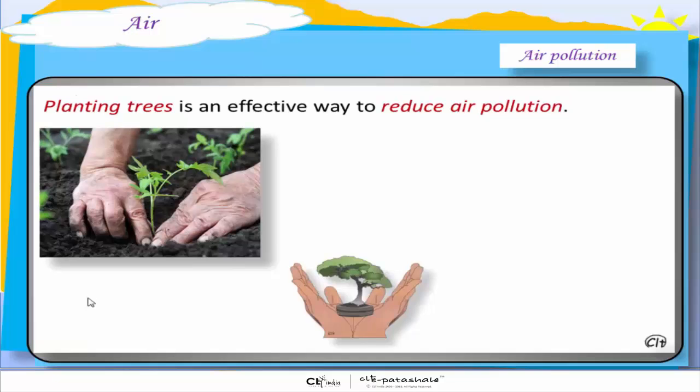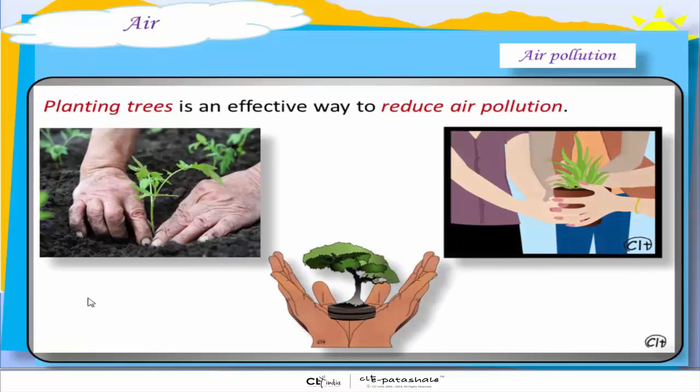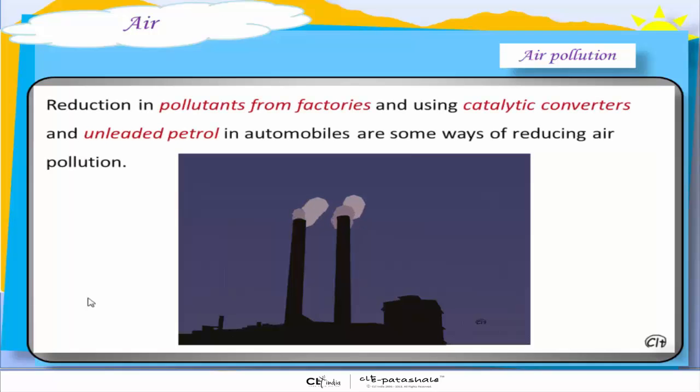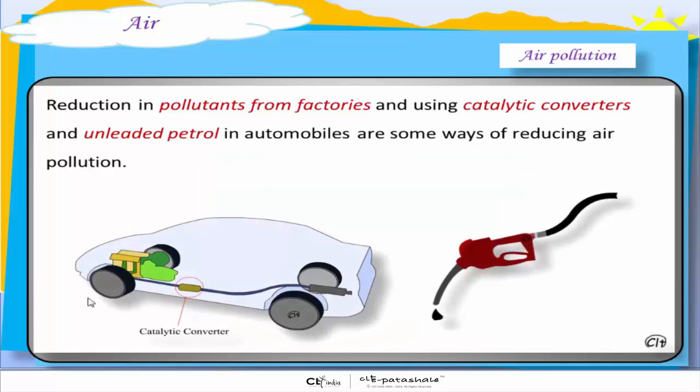Now, planting trees is an effective way to reduce air pollution. Reduction in pollutants from factories and using catalytic converters and unleaded petrol in automobiles are some other ways of reducing air pollution.